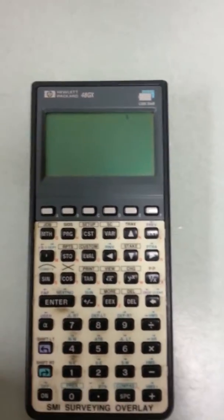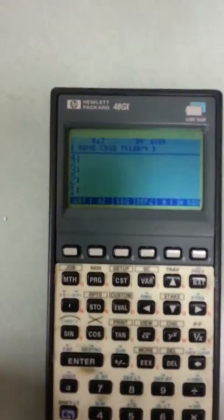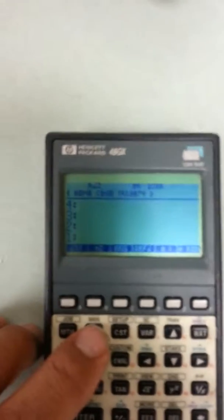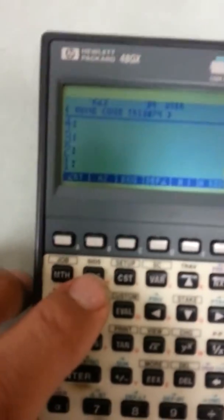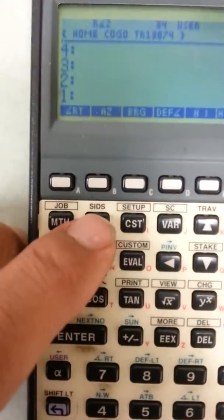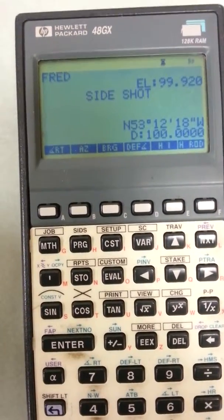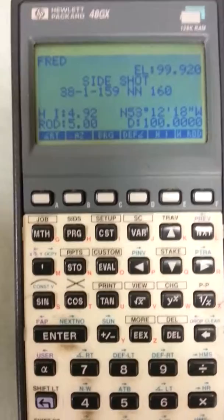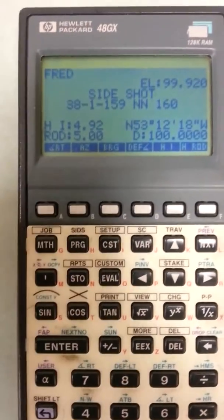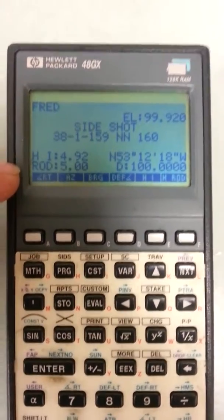Okay, turn it on, press the side shots key. You have the elevation, your side shot, you got your height of rod.